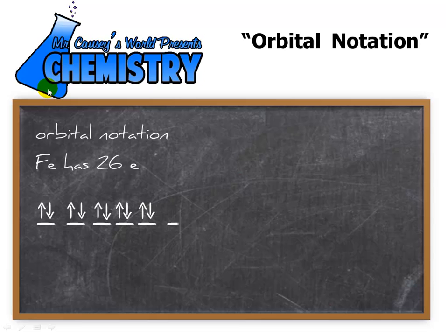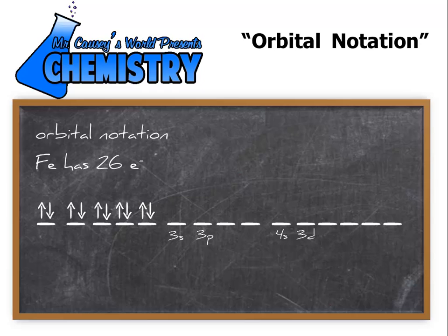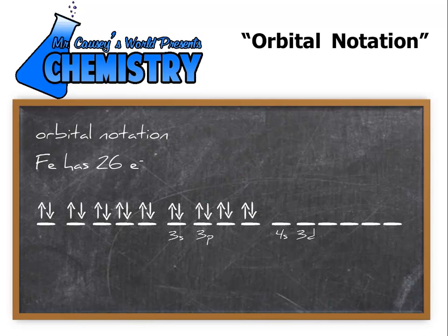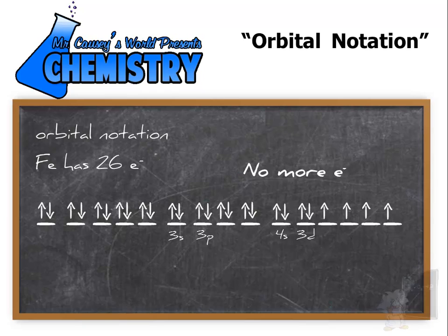Now let's look at the next set of orbitals: 3S and 3P. Now yes, there are some 3D's, but remember, before we can fill the 3D's, we must fill the 4S, then the 3D's. They fill following Hund's rule — one electron per orbital first, then come back and pair. Now the 3D's: Hund's rule again, then we come back and pair. Now we're out of electrons. That's 26 electrons, so we've gotten the orbital notation for iron.